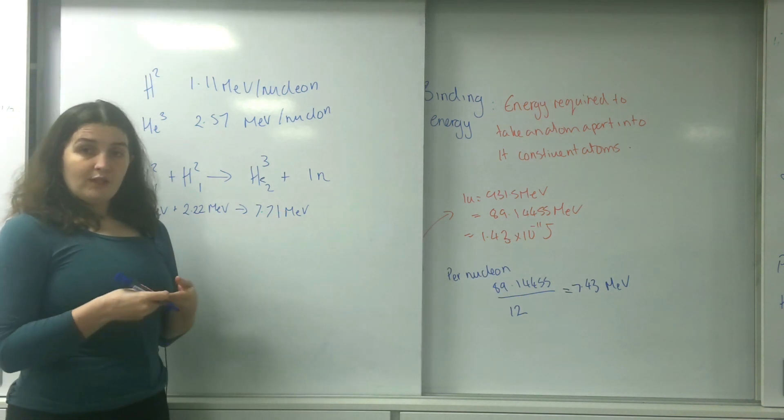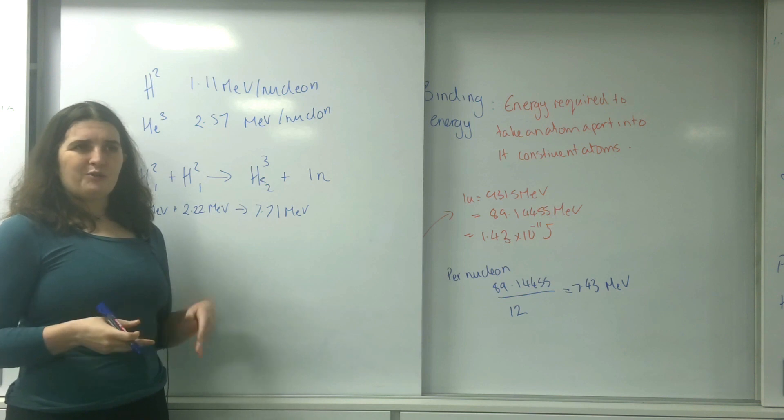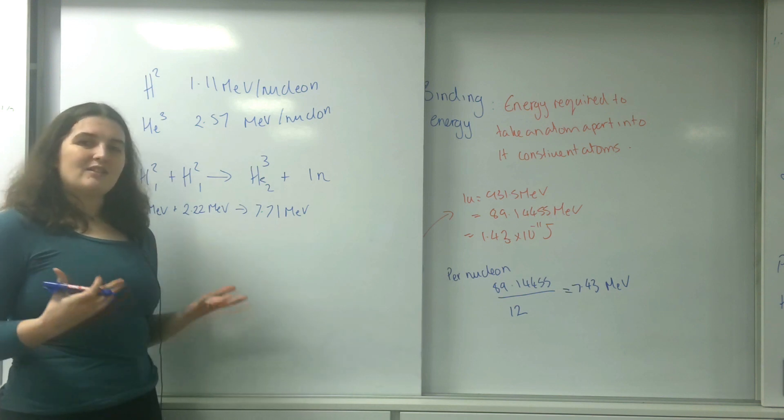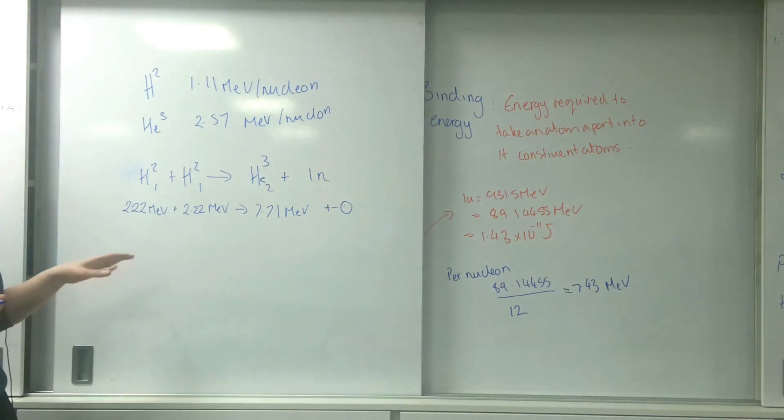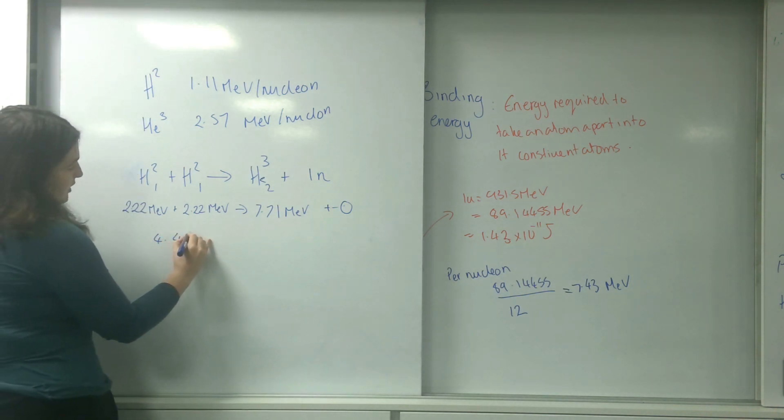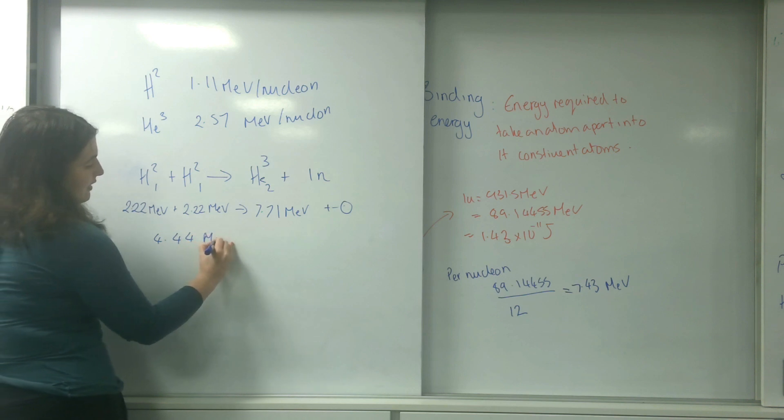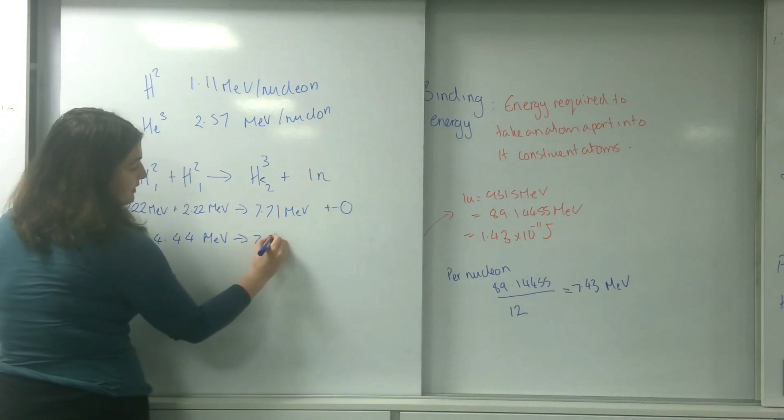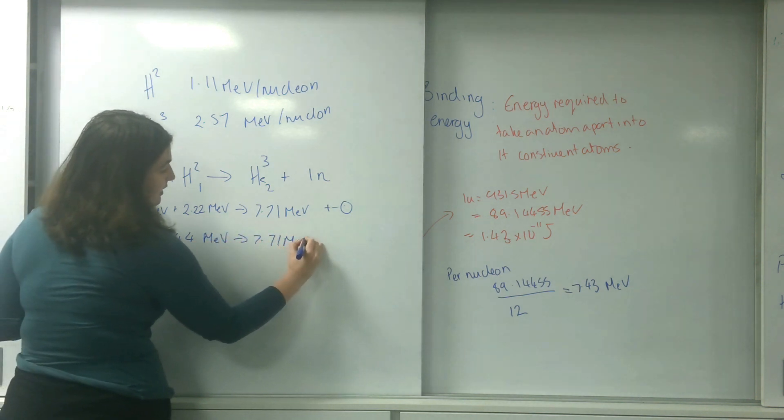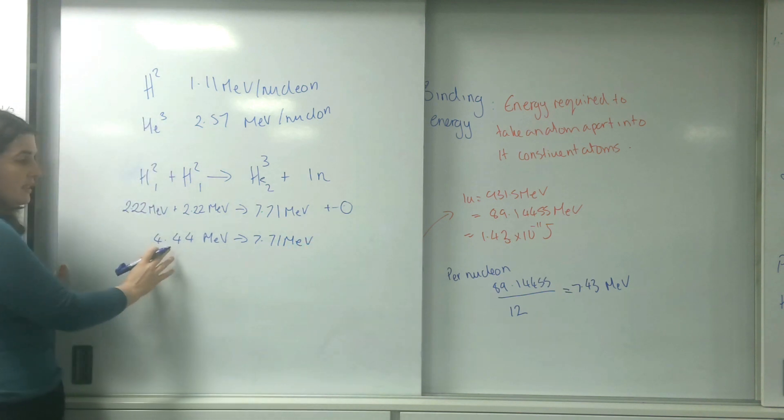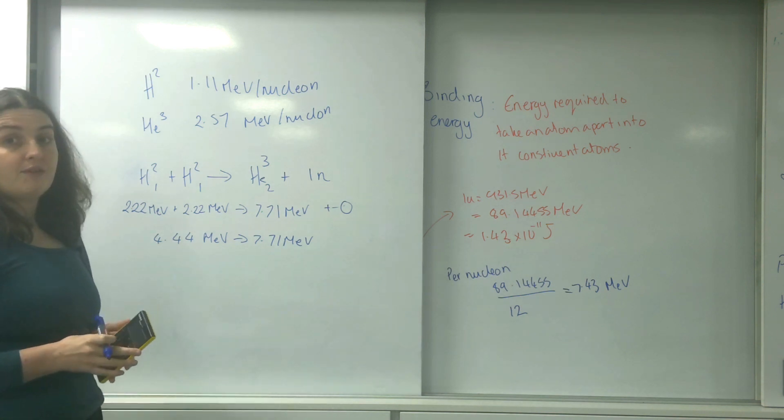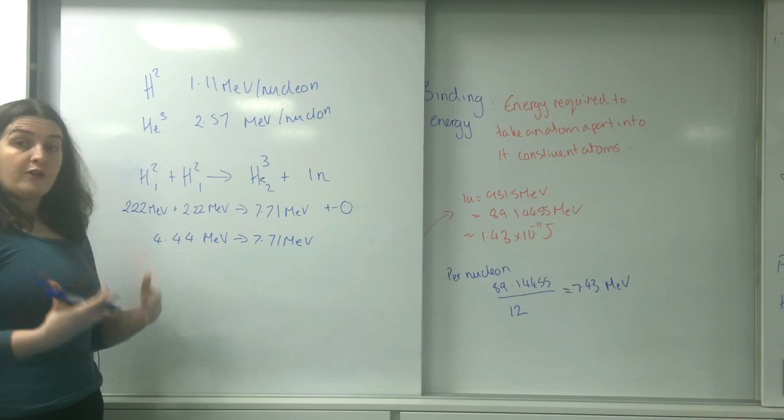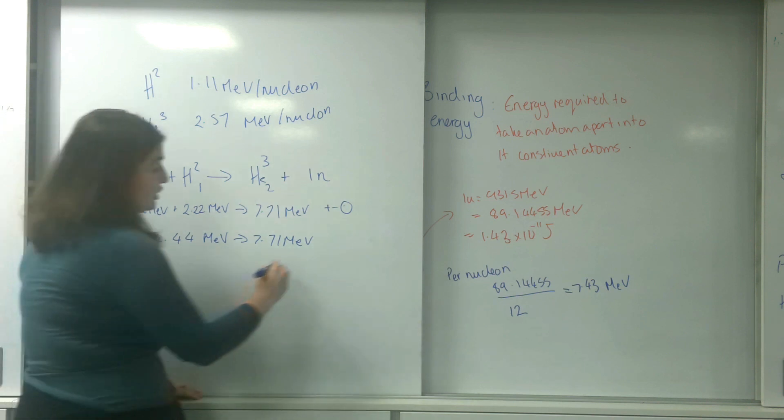This is important. When you do mass deficit, you do include the neutron. But when you're looking at the binding energy, neutrons are not bound to anything, so they don't have a binding energy. What I've got here is I've got 4.44 MeV goes to 7.71 MeV. As you can see, I've got a difference here, and the difference is 3.27.